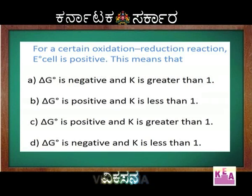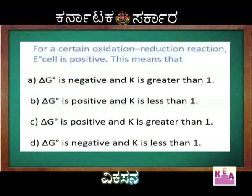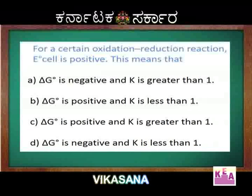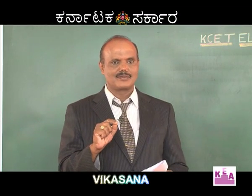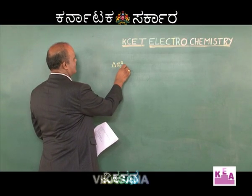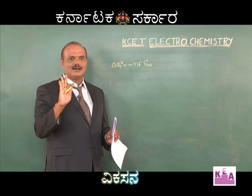For a certain oxidation-reduction reaction, E°cell is positive. To understand this, consider the relation between ΔG° and E°cell: ΔG° = −nFE°cell. To get ΔG° negative, E°cell should be positive.